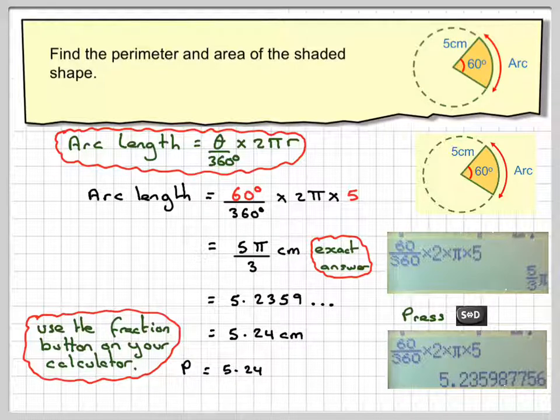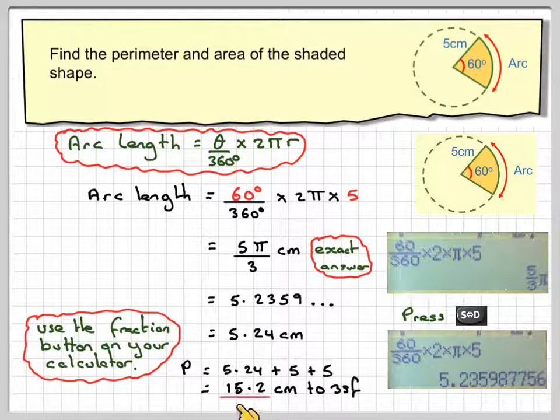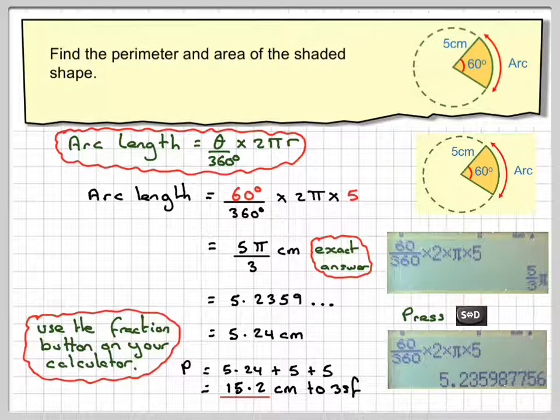So the perimeter will be the arc length plus 5 plus 5, because these are radii of the circle. This length is also 5, so you need to add 5 plus 5, which gives you 15.2 centimeters to 3 significant figures.